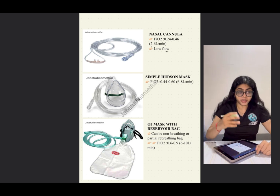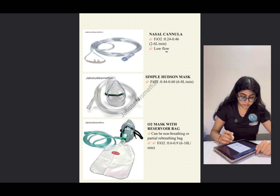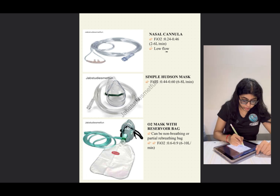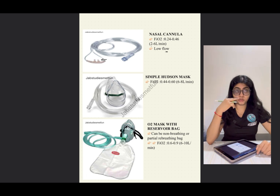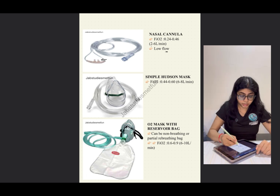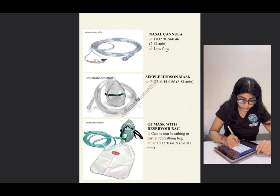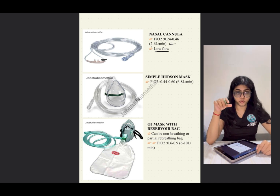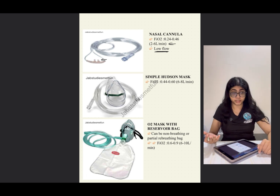The first oxygen delivery device is the nasal cannula. You might have seen a nasal cannula in person or in movies — it is a small pipe with two extensions to put in each nostril. It is a low-flow oxygen delivery device with a flow rate of two to six liters per minute. It's important to remember all the flow rates, as they may be asked in the exam.